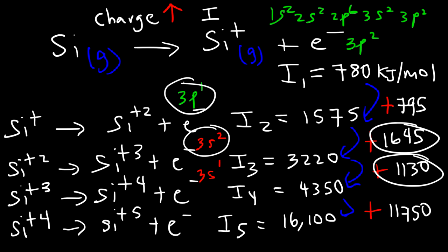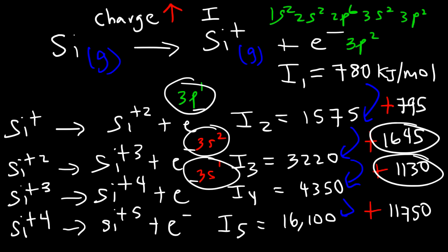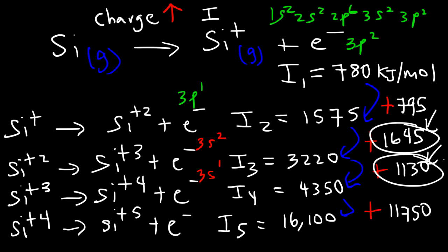That's why the jump going from 2 to 3 is greater than 3 to 4 — you're going from a 3p electron to a 3s electron. Removing either of the two 3s electrons isn't that different; the only change is the charge, so it's harder to remove an electron when the net charge is +3 versus +2. But when they're in the same sublevel the ionization energies don't jump as much.